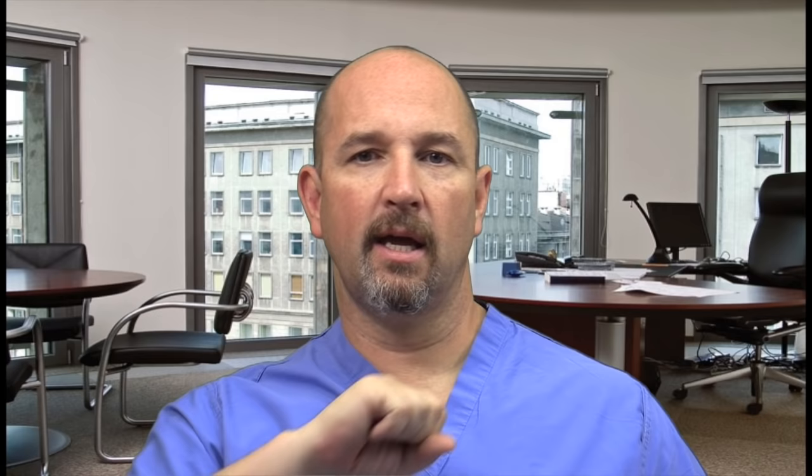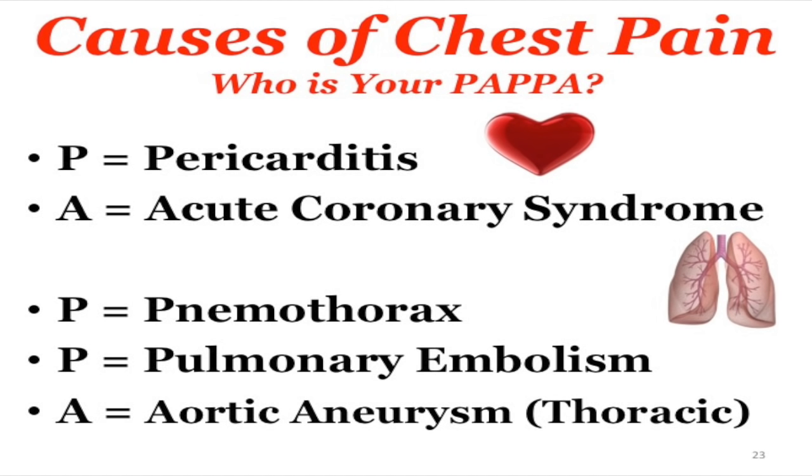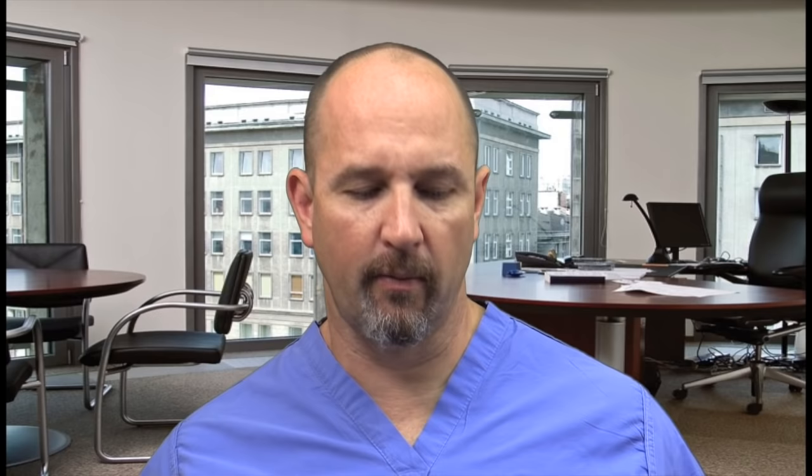There are five causes of chest pain — the mnemonic is PAPPA: Pericarditis, Acute coronary syndrome, Pneumothorax/PE, aneurysm, thoracic dissection. The risk factors for arterial disease are SAD CHF — Smoking, Age, Diabetes, Cholesterol, Hypertension, Family history. The diseases of the arterial system are different from the venous system. Venous risk factors for DVT/PE are Virchow's triad: stasis, hypercoagulable state, and damage to or near a blood vessel.